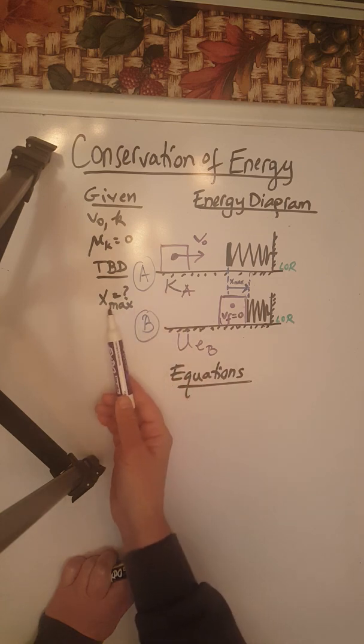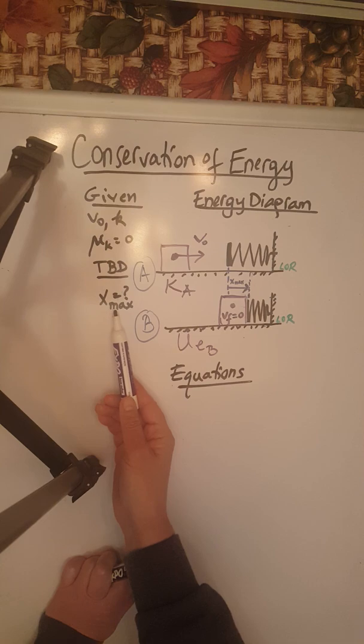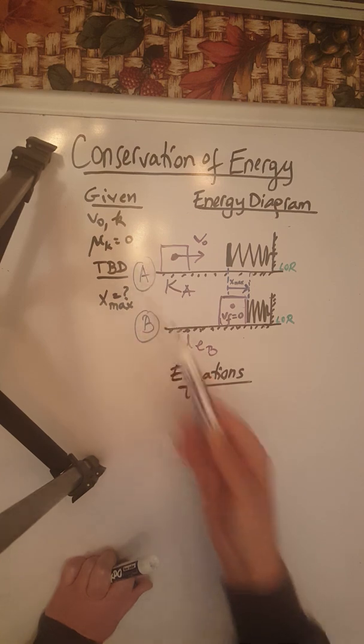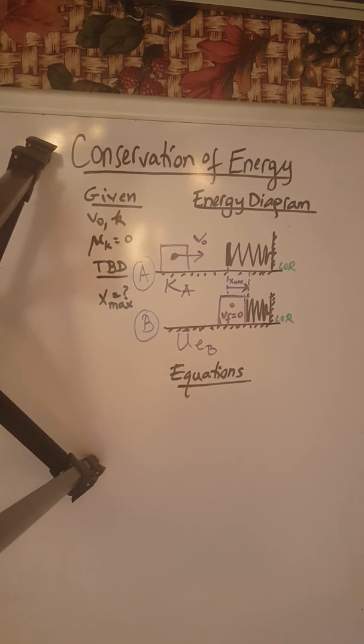What we need to calculate is how much did the spring get compressed—so what's x max equal to—knowing v-naught, k, and the fact that there is no friction involved in this problem.